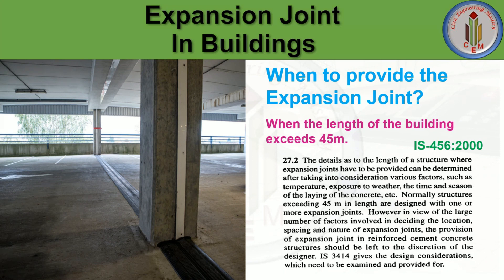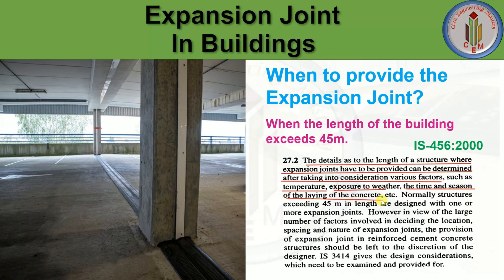When to provide the expansion joint? When the length of the building exceeds 45 meters, we need to provide an expansion joint, as given in IS 456:2000 Clause 27.2: 'The details as to the length of a structure where expansion joints have to be provided can be determined after taking into consideration various factors such as temperature, exposure to weather, and the time and season of laying of concrete. Normally, structures exceeding 45 meters in length are designed with one or more expansion joints.'